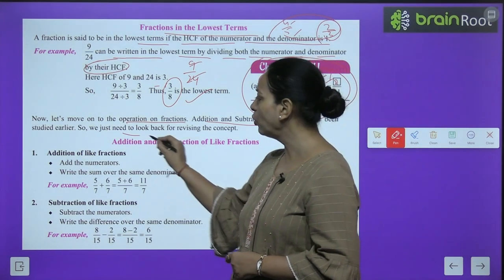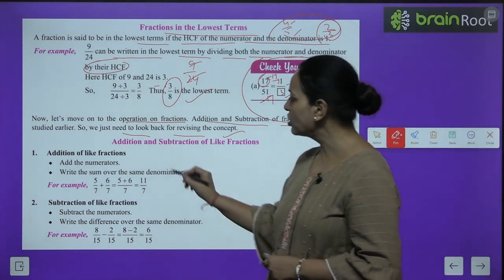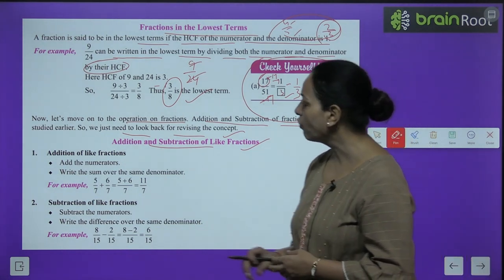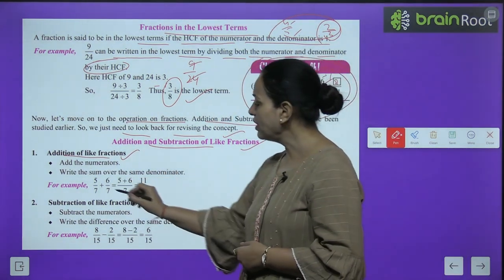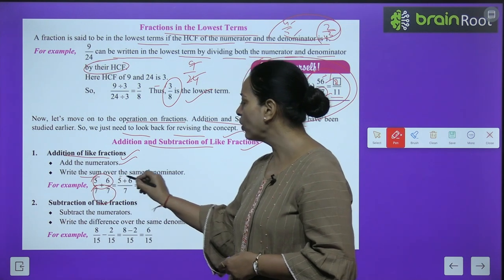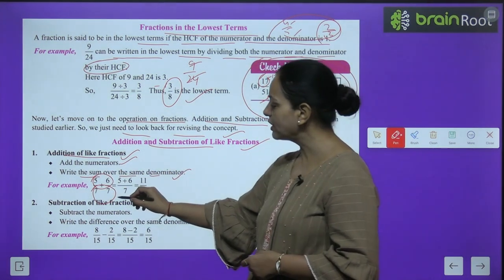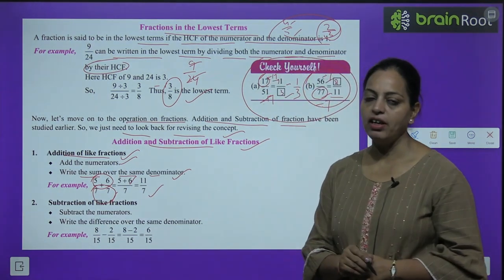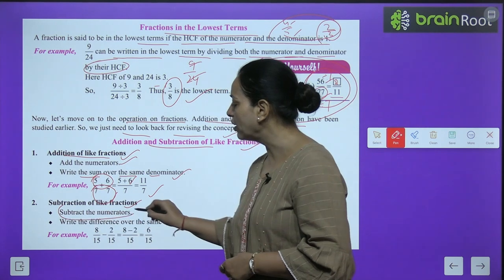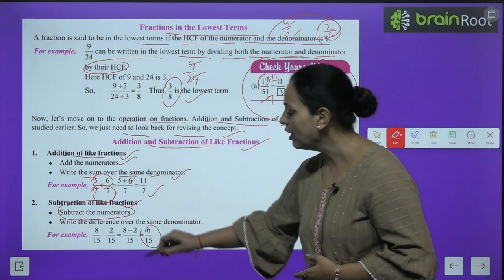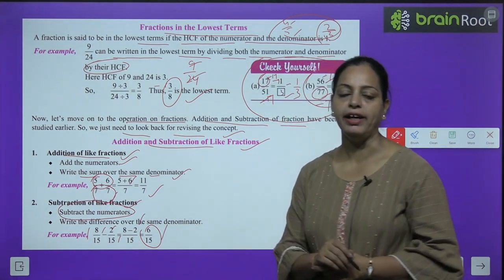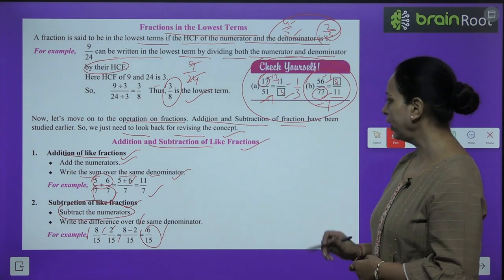Addition and subtraction of like fractions: since the denominator is the same, simply add or subtract the numerators. Addition: 5/7 + 6/7 = (5+6)/7 = 11/7. Subtraction: 8/15 − 2/15 = (8−2)/15 = 6/15. I hope it's clear.